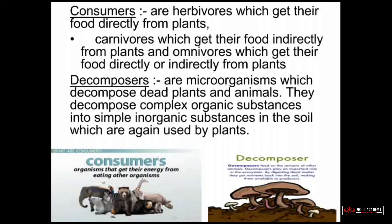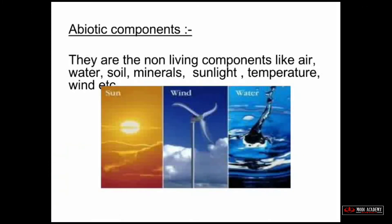Now we discuss abiotic components of the ecosystem. These are non-living components like air, water, soil, minerals, sunlight, temperature, wind, etc. The meaning of 'abiotic' is simply non-living components.